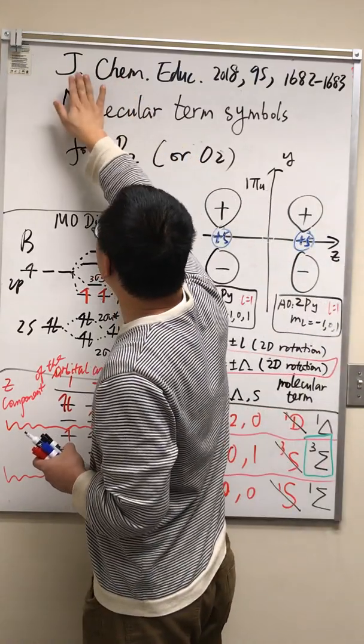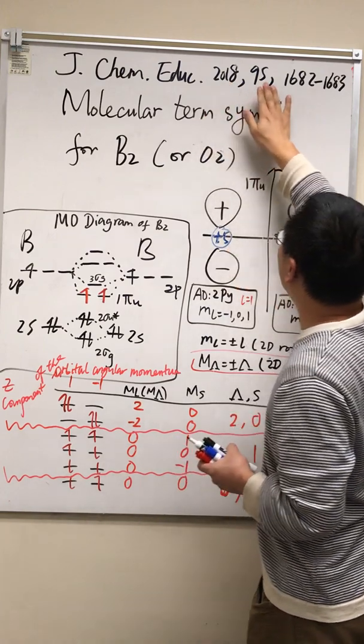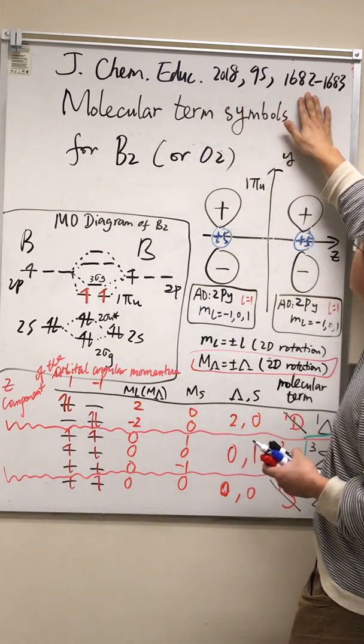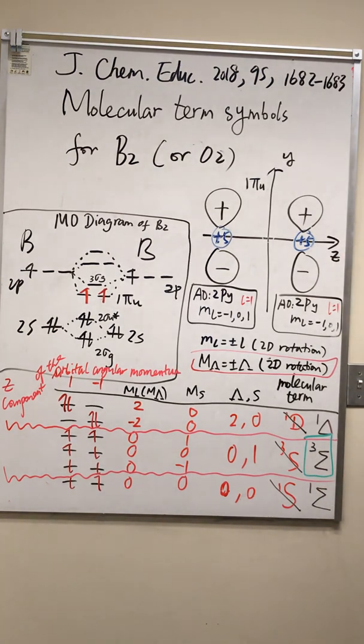If you want to see another example about oxygen two or see a more rigorous explanation about determining the molecular term symbols for diatomic molecules, here's the paper: Journal of Chemical Education 2018, volume 95, page numbers 1682 to 1688. It's a short paper. Thank you.